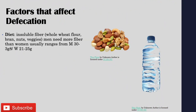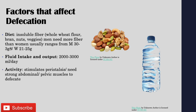Diet affects defecation as well. Include insoluble fibers such as whole wheat flour, bran, nuts, and vegetables to encourage a normal defecation pattern. Men usually require 30 to 38 grams of fiber, while women require 21 to 25 grams daily. Fluid intake also affects it — try to include 2,000 to 3,000 milliliters per day. Activity helps stimulate peristalsis and encourage defecation; a sedentary lifestyle makes you more prone to constipation. Strength training can also build strong abdominal and pelvic muscles needed to facilitate defecation.